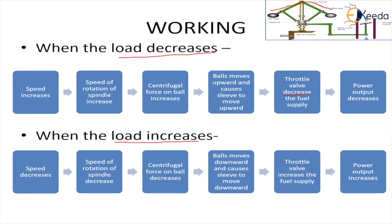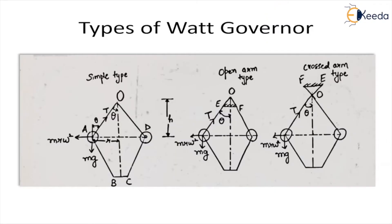When the reverse happens — when load is increasing — speed decreases. When speed decreases, the speed of rotation of the spindle also decreases, and the centrifugal force, which is mrω², decreases as omega decreases. So when centrifugal force decreases, the balls come downward. When the fly balls come downward, the sleeve also moves downward, due to which the throttle valve opens up to a vertical position and increases the supply of fuel, due to which the power output increases and more fuel is given to maintain the mean speed.